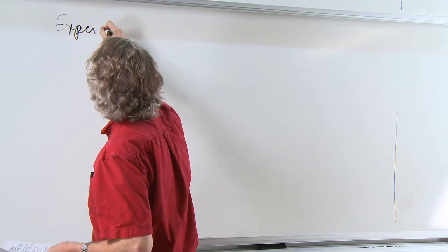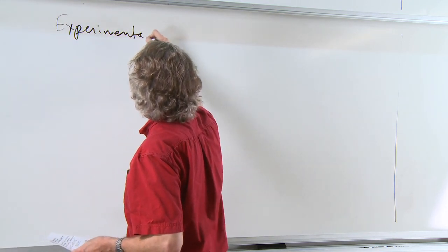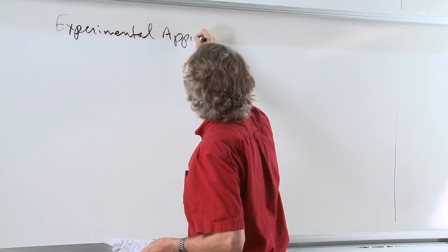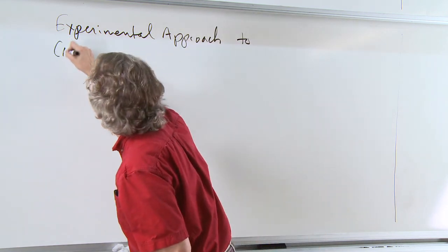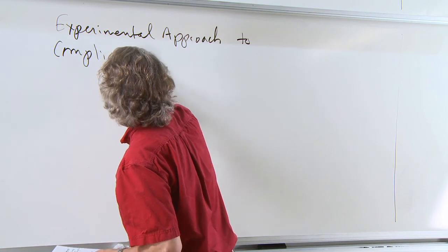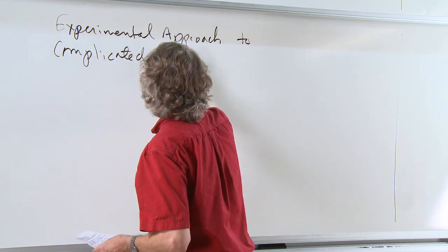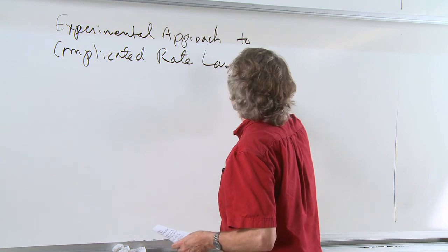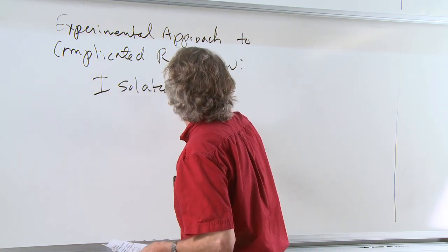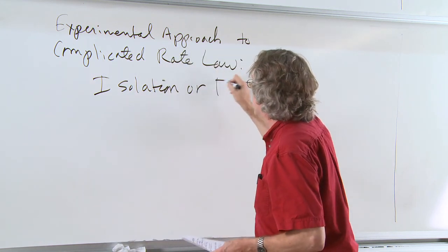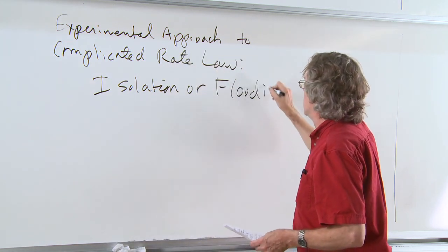One of these experimental approaches to this kind of complicated rate law is something known as an isolation or flooding experiment.